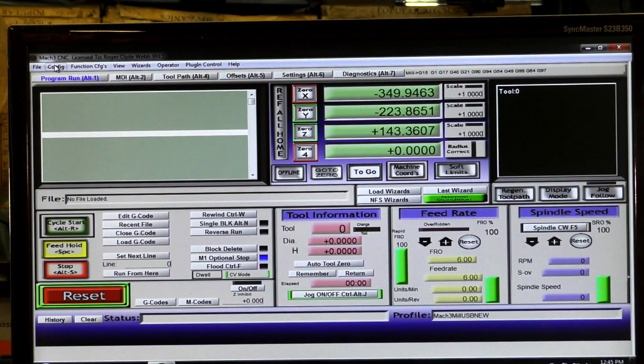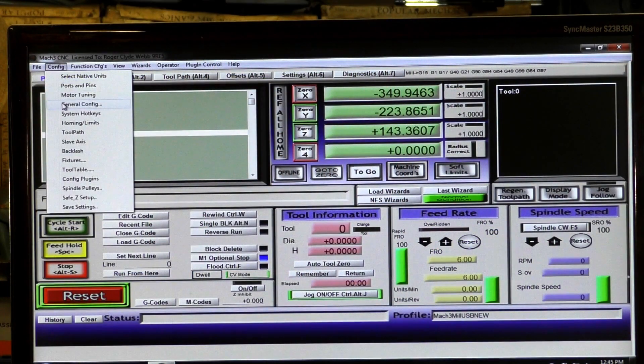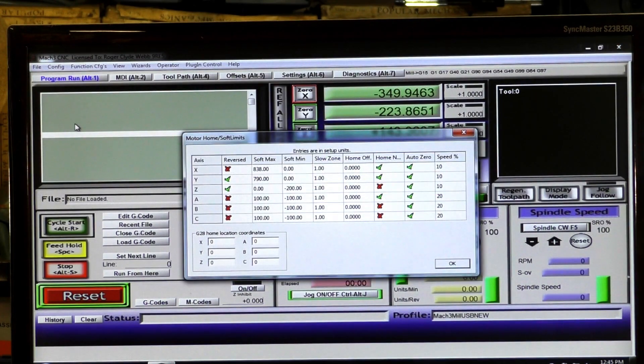OK, so you go into config, home and limits, and over in this far right hand side, and we'll do the X again, you'll see that it is speed in percentage of the jog speed. That's the speed at which it homes.